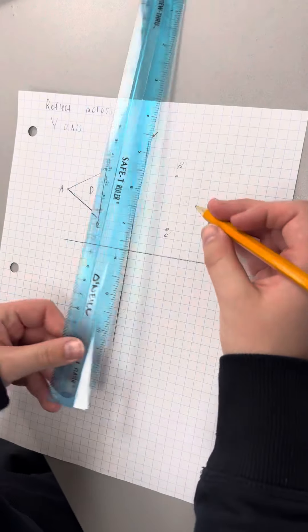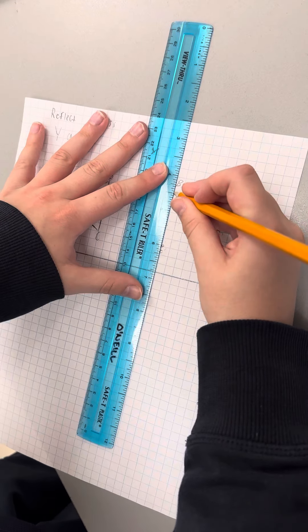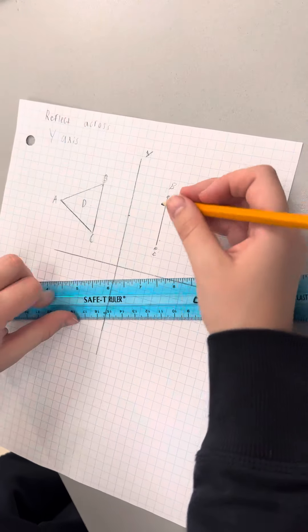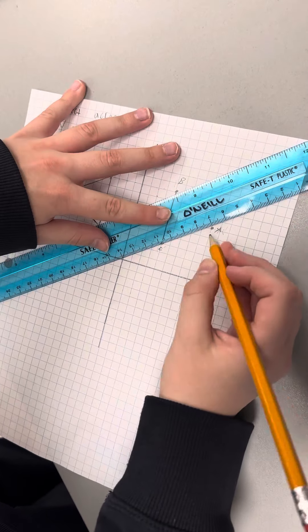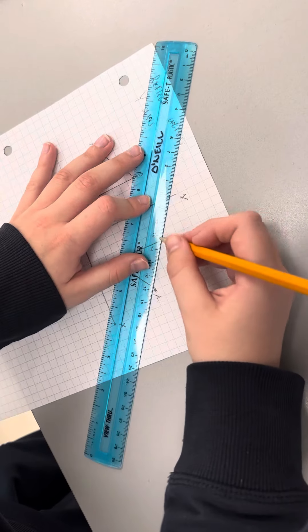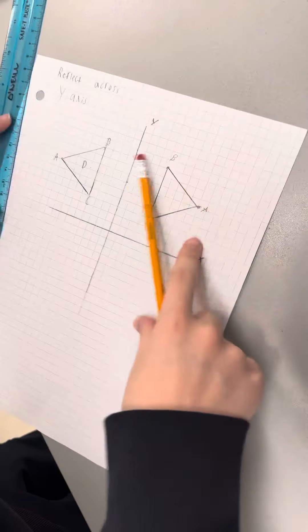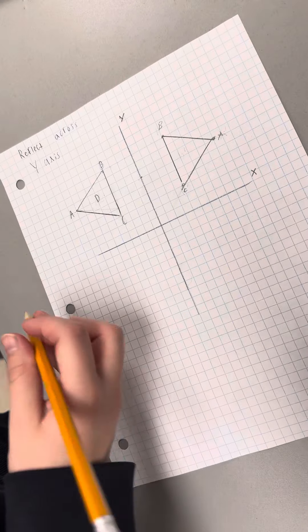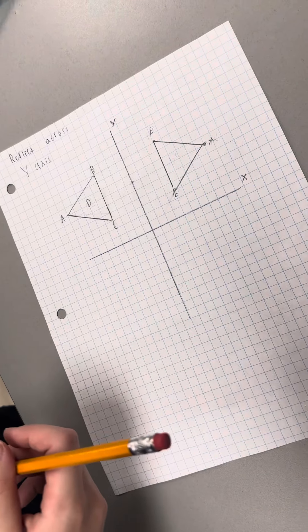And connect all the lines with the ruler. So connect this line, connect this line, and connect this line. So now you have reflected shape D across the y-axis.